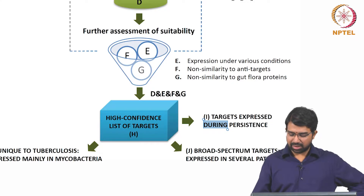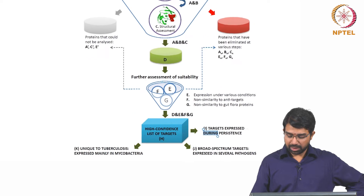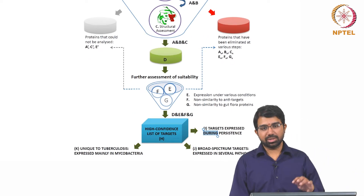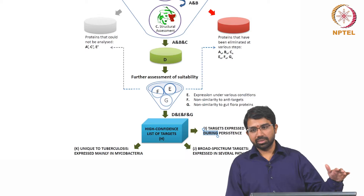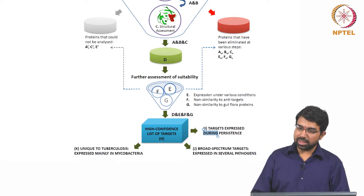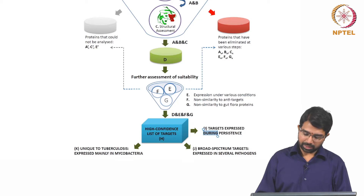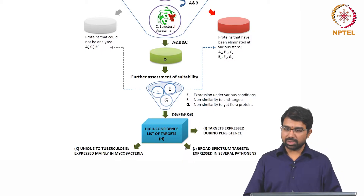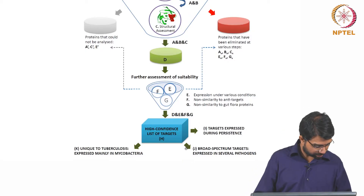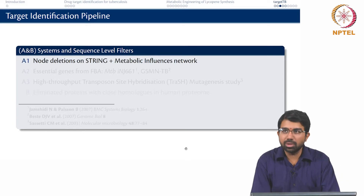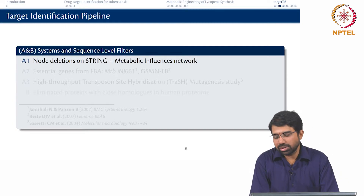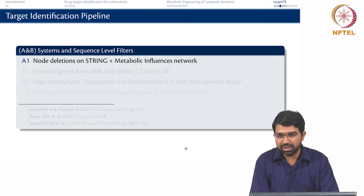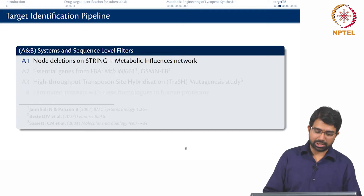We also looked at targets expressed during TB persistence, since TB persistence is a major issue — the organism just dormantly sits in the body. We also looked at broad-spectrum targets and unique targets. After this, targets split into those expressed mainly in mycobacteria and those common to several pathogens. For the first filter, we did node deletions on the STRING interaction network, also adding metabolite influences and looking at enzymes adjacent in the metabolic network to assume functional associations.